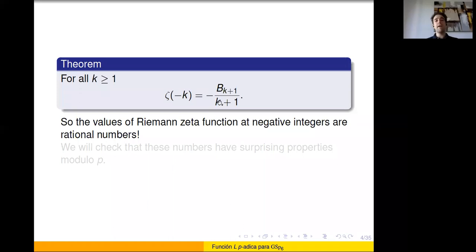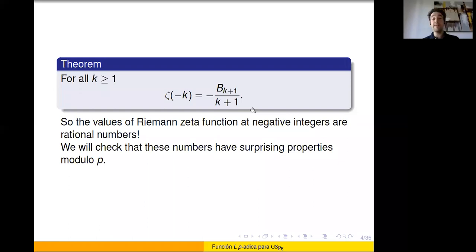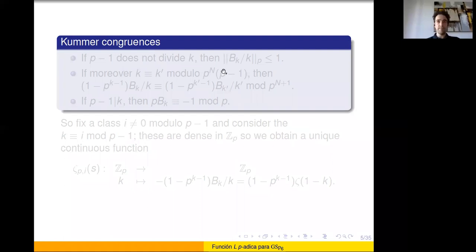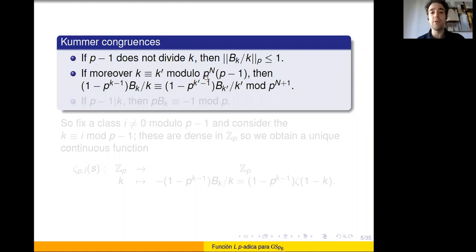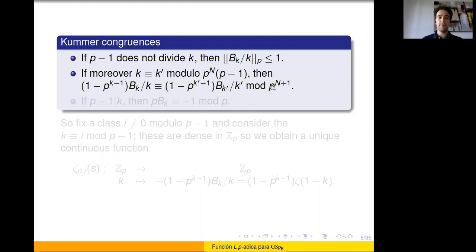For example, if we take k's in an arithmetic progression modulo p, are these Bernoulli numbers also in a progression modulo p? This brings us to Kummer congruences. These are a series of p-adic properties satisfied by Bernoulli numbers. First, if p minus 1 does not divide k, then zeta of minus k is a p-adic integer. Second, if two numbers are congruent modulo p^n times (p-1), then the Bernoulli numbers, modified by the factor (1 - p^{k-1}), are congruent modulo p^n.